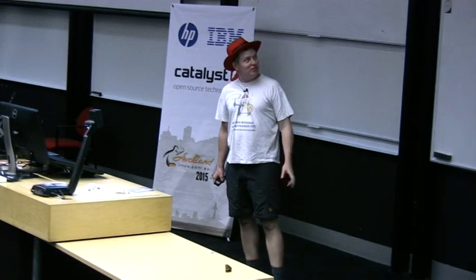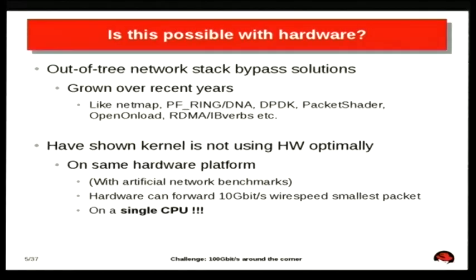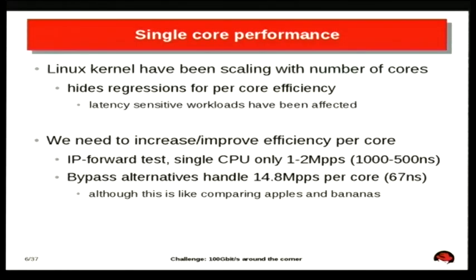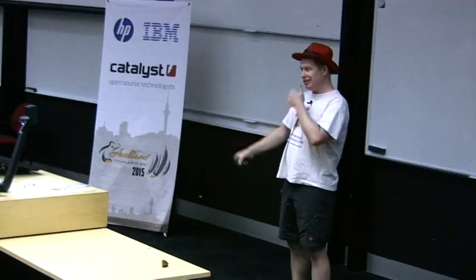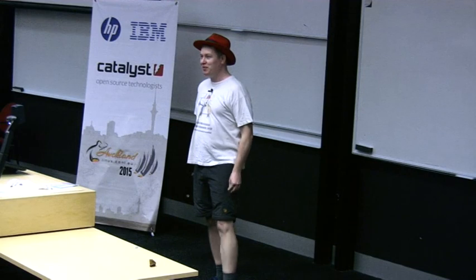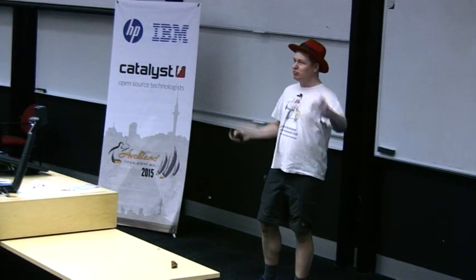Even in artificial benchmarking, they can show that they can forward 10 gigabit at wire speed at the smallest package size on a single CPU — worth noticing it's a single CPU, not spread across multiple CPUs. The hardware should be fast enough. The way I see it is that the kernel has been scaling out with the number of cores, and we've sort of missed out — we are adding latency and more code in the kernel, hiding latency regressions. Latency-sensitive workloads have already been affected.